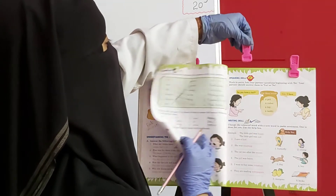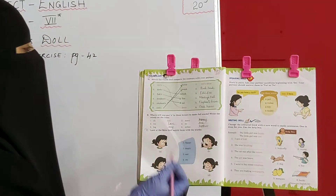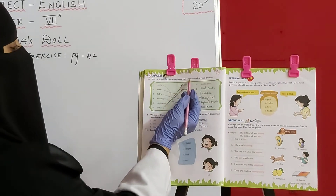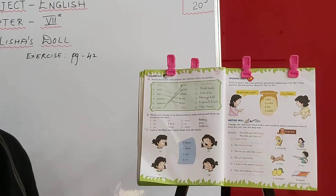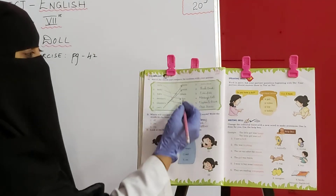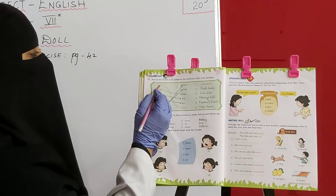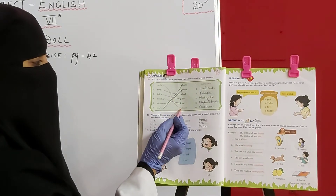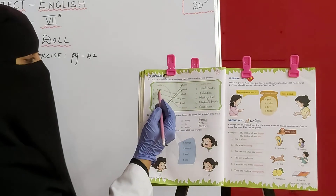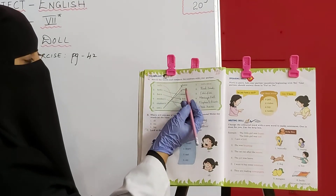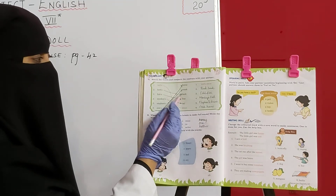Turn over your page. Match the words and compare the answers with your partner. Aapko kya karna hai? Words match up karne hain. Yahaan pe same two parts diye gaye hain. First part ko second part se match karna hai. So first one: Dolls ka kya aayega? Dress aayega. Dolls — dress. Birds — yahaan pe kya aayega? Birds ka beak. Birds ko hoti hai na beak.